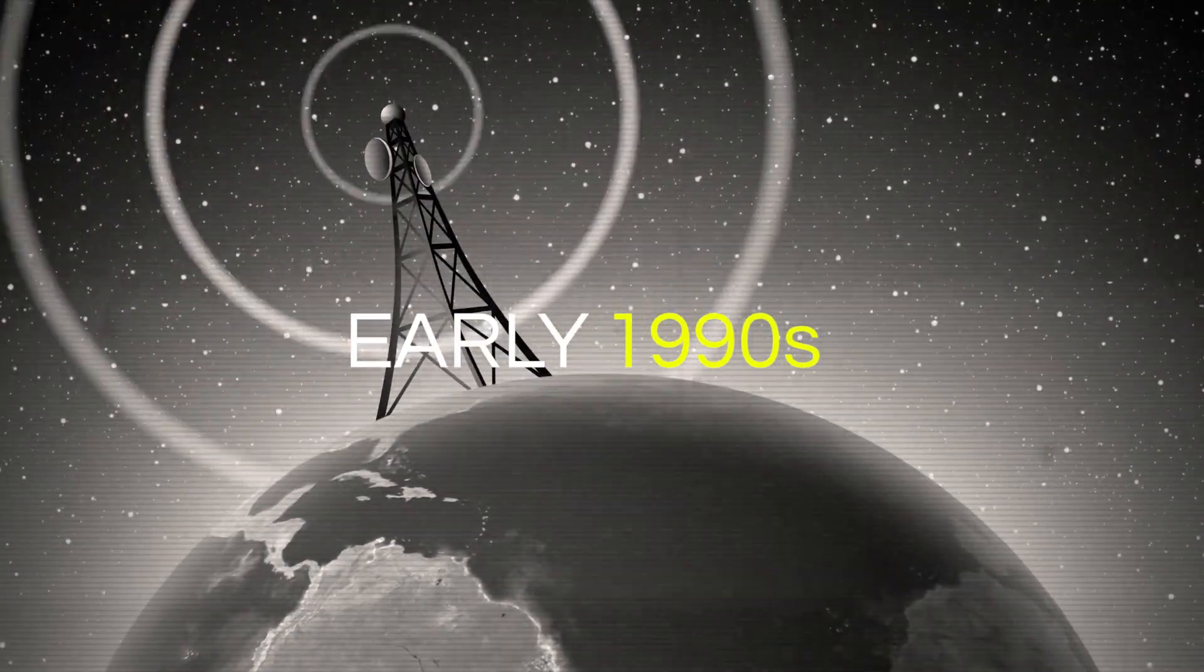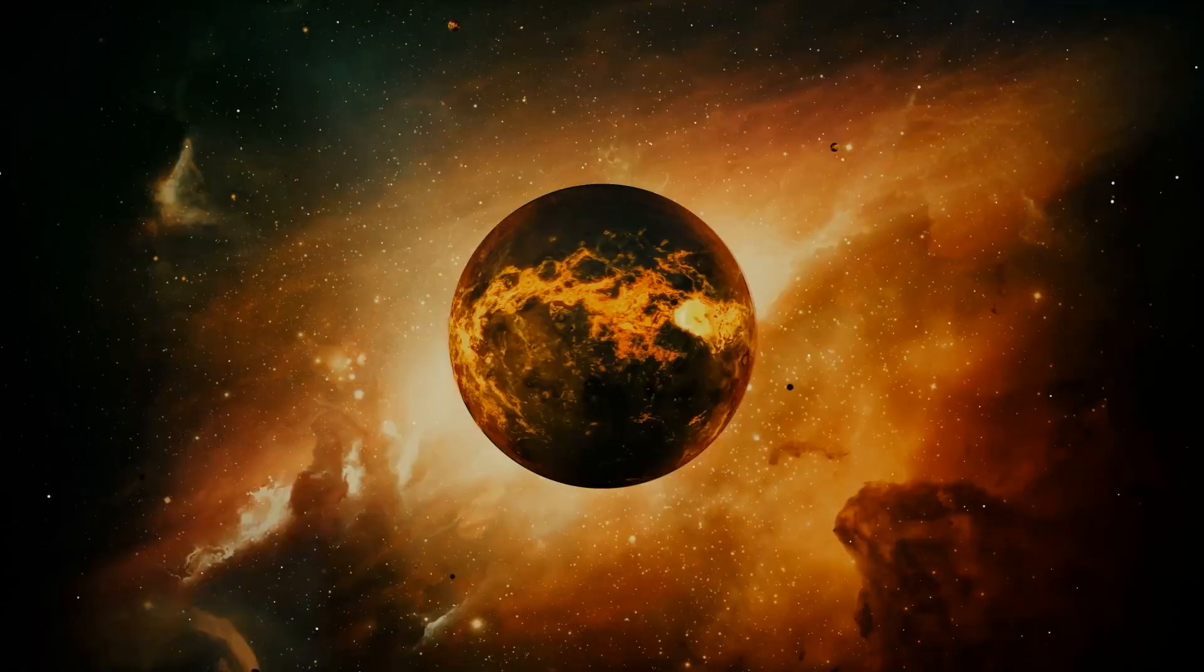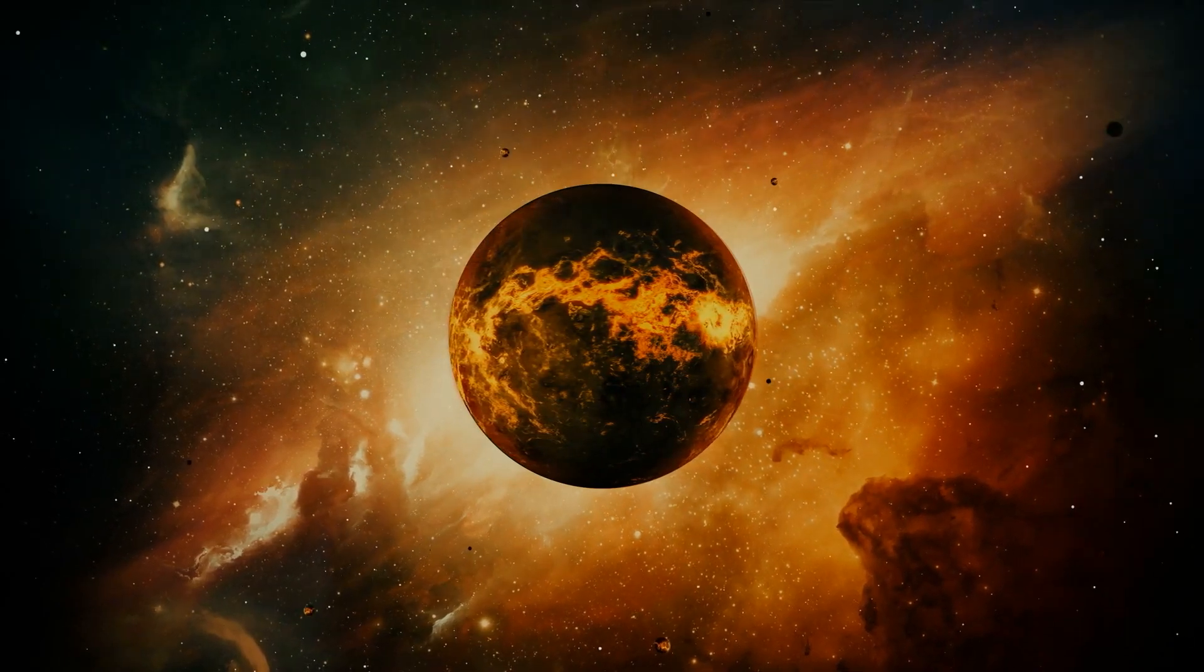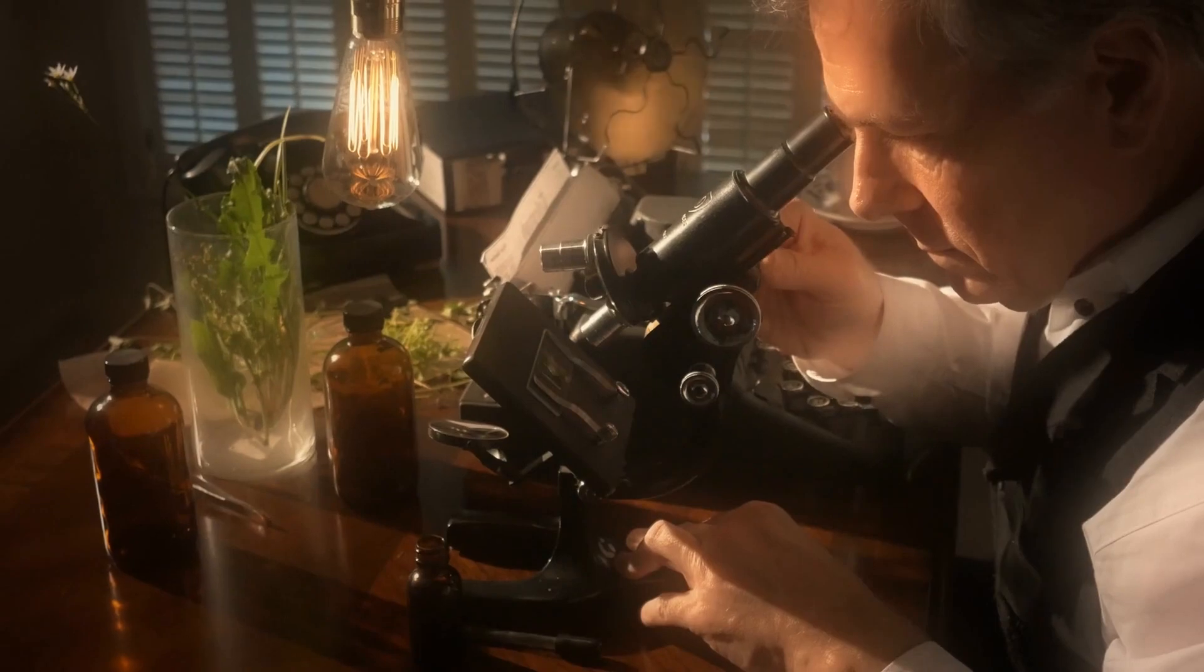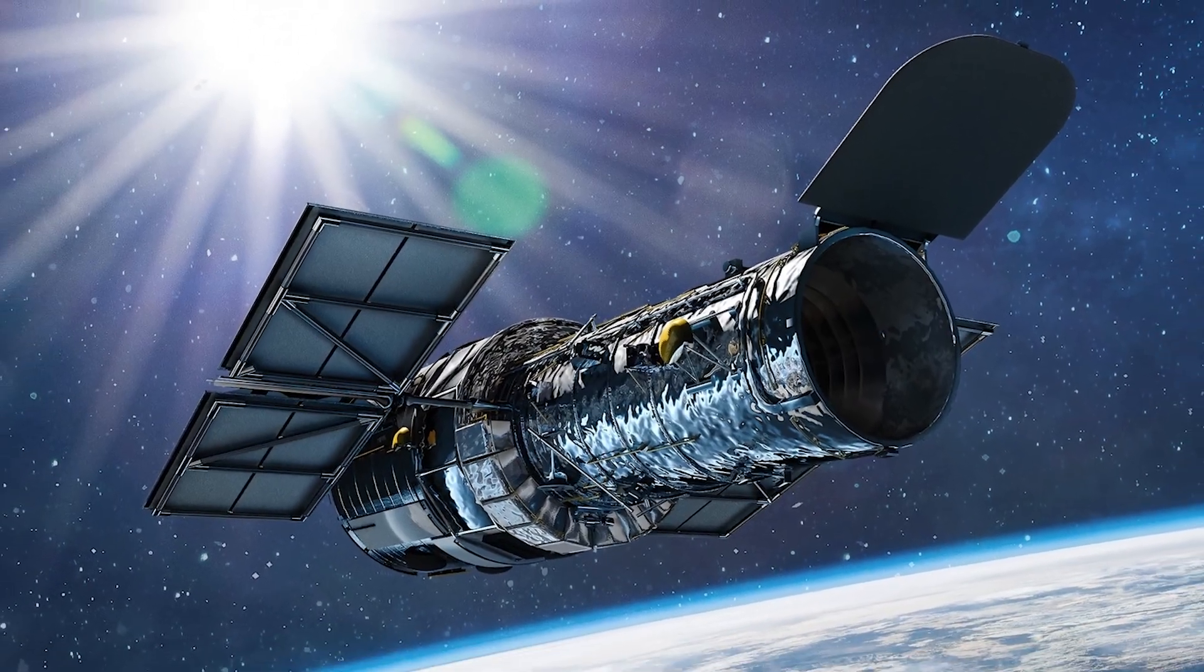But in the early 1990s, we began to detect planets outside of our own system, and now we've detected over 3,000 of them. We've even got missions like the Kepler telescope searching for more.